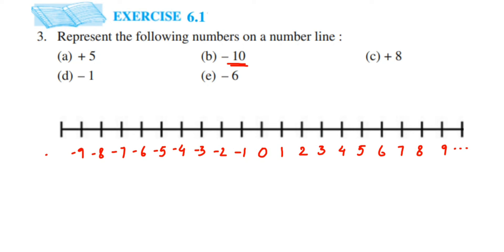The last one is minus ten. You can continue the number line or stop here. The first number given is plus five — a positive integer — so it comes on the right hand side. I'll write capital A to mark it.